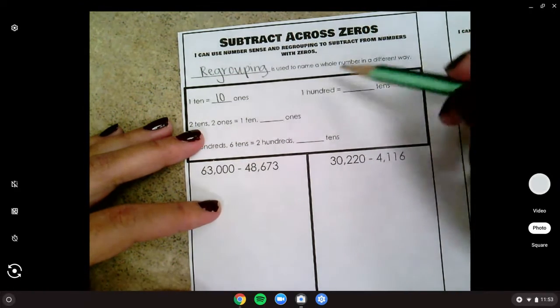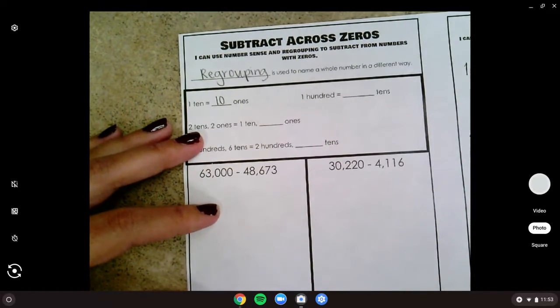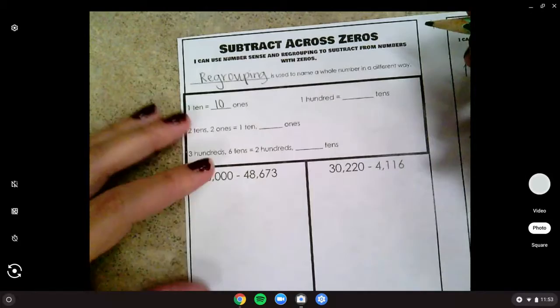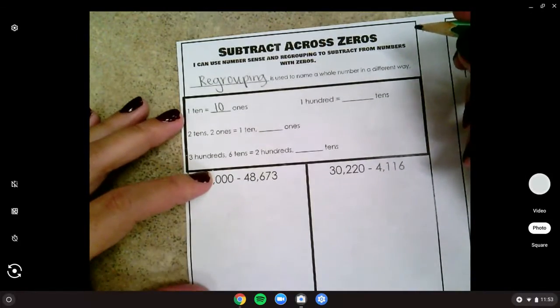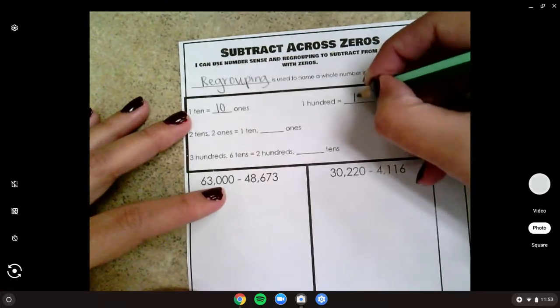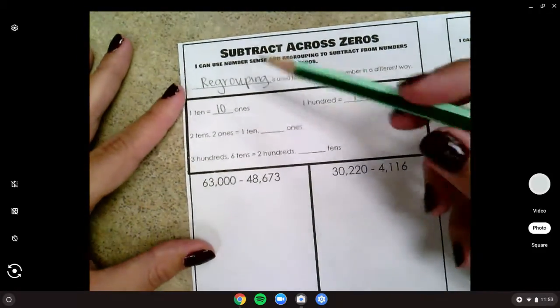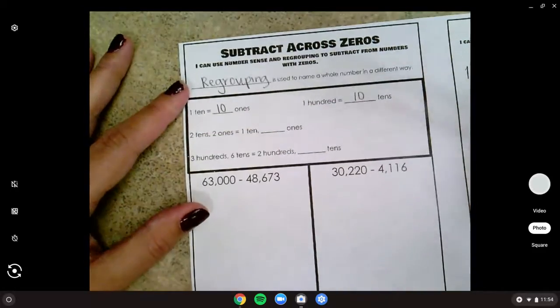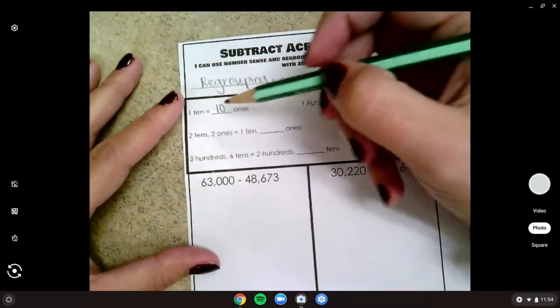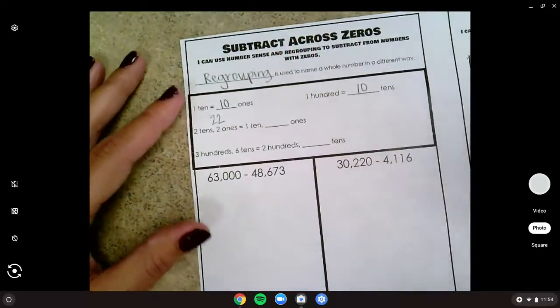We could have 100 and we can regroup that as how many tens? Do you know? 10, 20, 30, 40, 50, 60, 70, 80, 90, 100. It would take ten tens. So now I have a little bit more of a challenging one. I have two tens and two ones. Let's first think through what number is that. Two tens and two ones is 22.